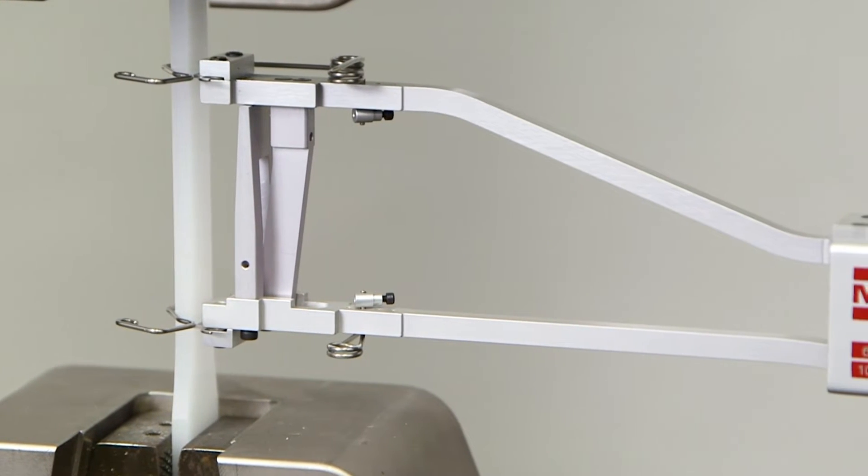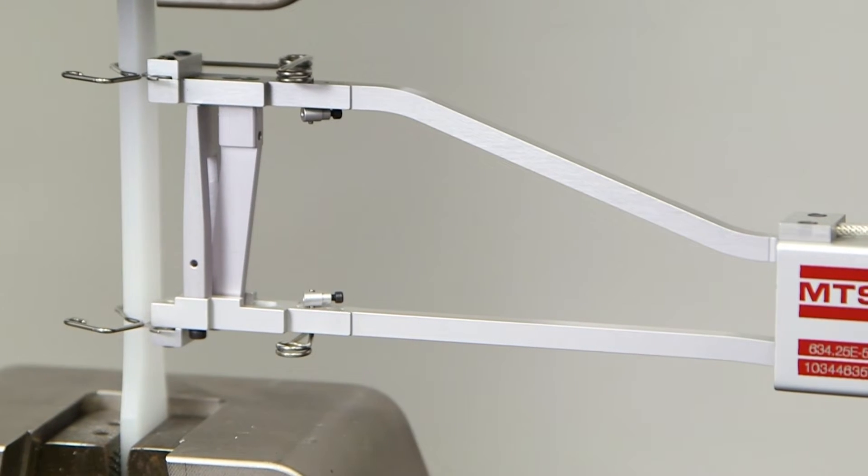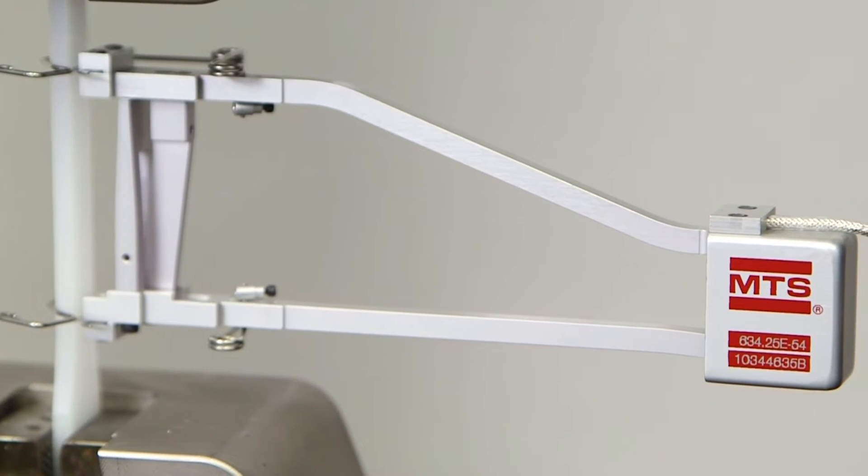After the specimen is placed in the grip, an extensometer will be attached. An extensometer is a device that is used to measure the elongation of the sample.